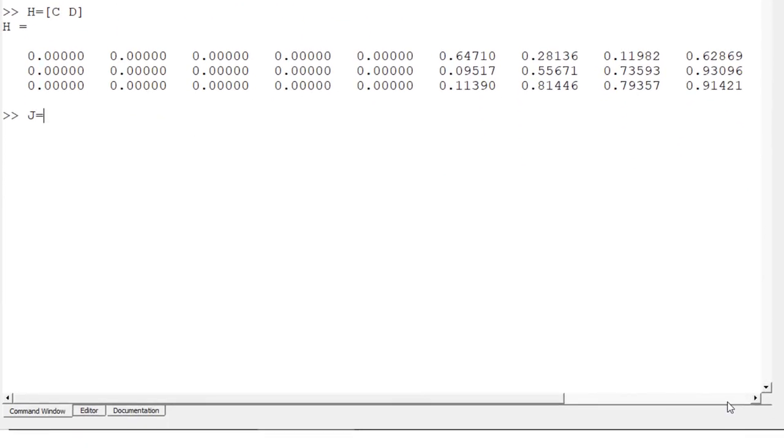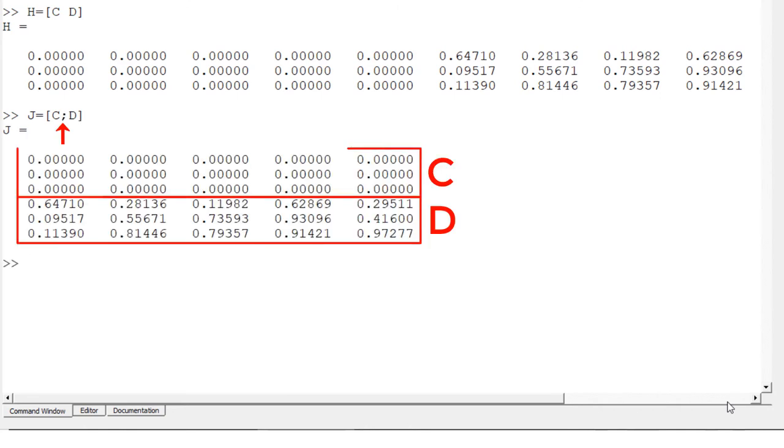For matrix J, matrices C and D are combined in the row direction with the brackets semicolon between C and D. You can keep adding matrices as long as they comply with the size requirements.